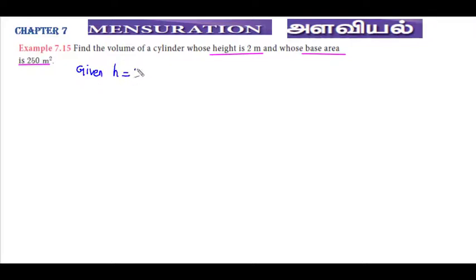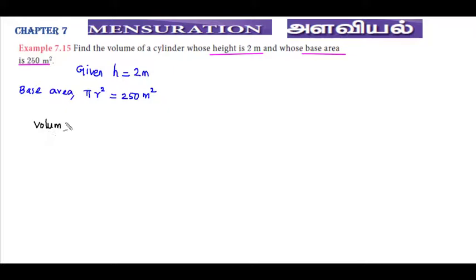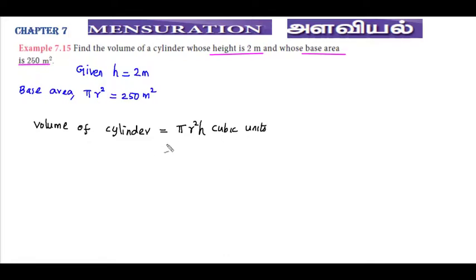Height h equals 2 meter and base area under the circle, so circle area is pi r square, with units 250 meter square. We find out the volume. Volume of cylinder is pi r square h, giving cubic units. Here we add the data to find out the volume of the cylinder.